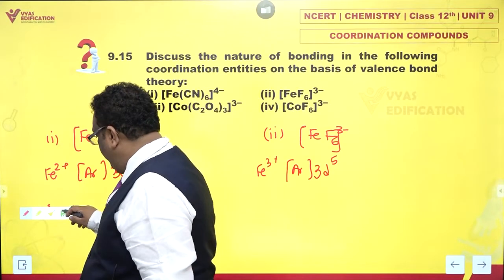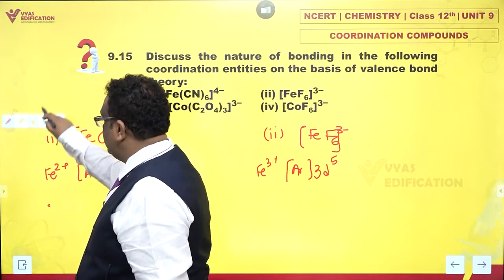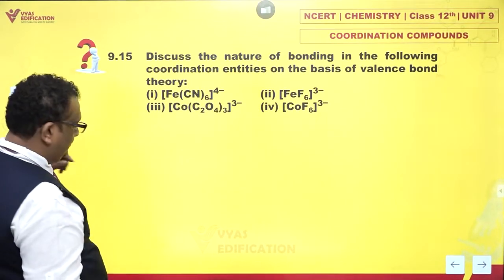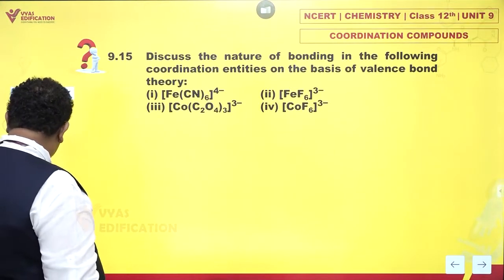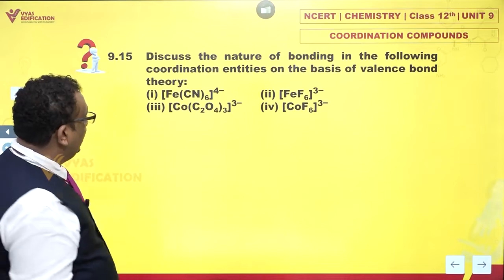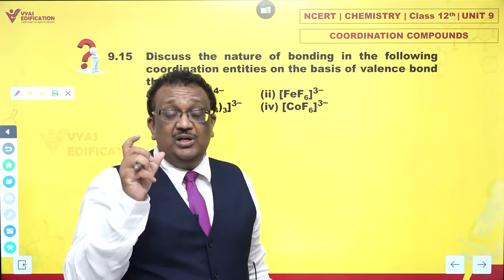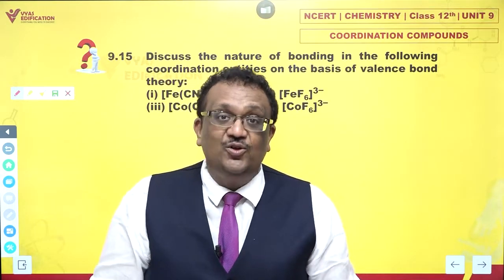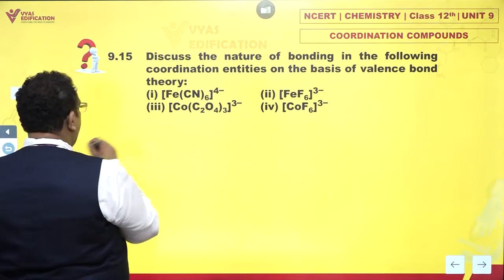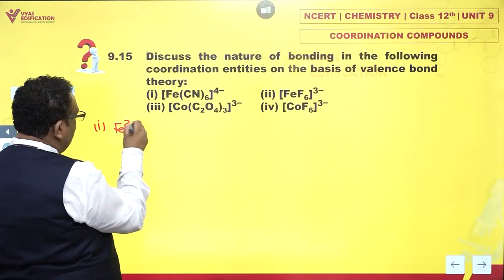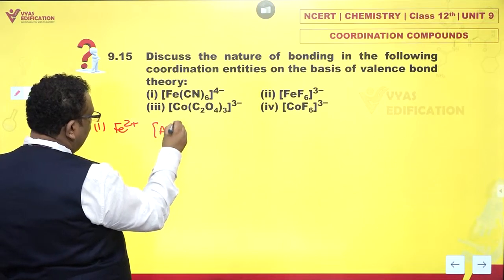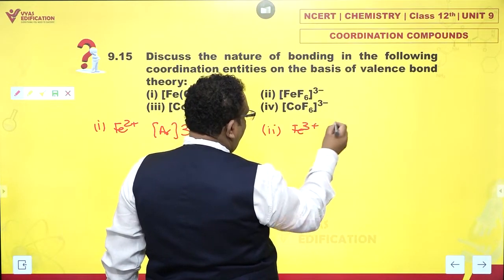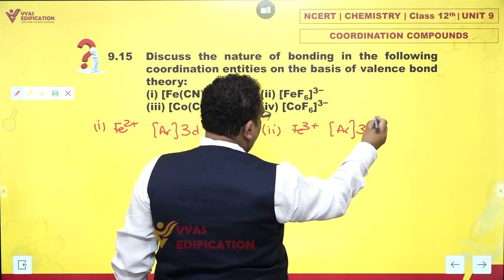So what are the steps? Please note very carefully. Step number one: I found out what is the charge on metal ion and then I wrote down electronic configuration of metal ion. Ferrous in the first example is argon 3D6. And in the second example, I have ferric which is argon 3D5.